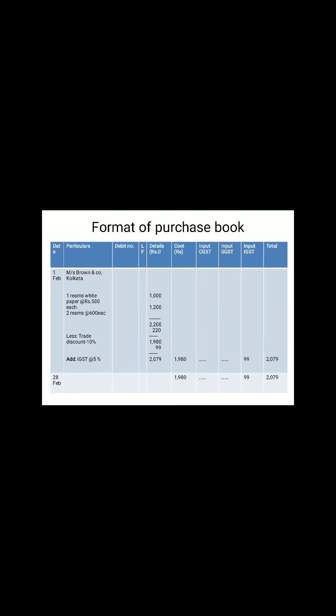You can see the format of the purchase returns book. For example, goods already purchased from Brown and Company — out of those, a few items are being returned: one rim returned at 600 and two rims at 500. Calculate the figures, and then the trade discount is also deducted at the same rate as when the goods were purchased. If originally 10% trade discount was applied, the same 10% will be applied at the time of returning.